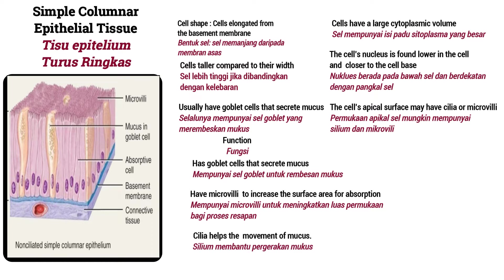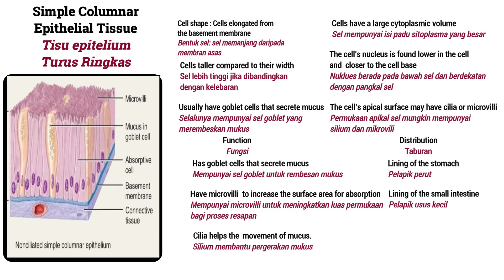Cilia help in the movement of mucus. Distribution: lining of the stomach, lining of the small intestine, lining of the fallopian tube and uterine tube, upper respiratory tract and nasal cavity.